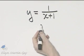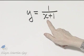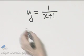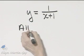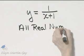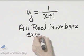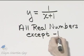So what's the domain of this function? x can be any real number except negative one. That's the domain. All real numbers except negative one.